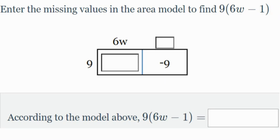So again, find the missing values in the area model to find 9 times 6w minus 1. So this one right here, this is a little bit different. We are not looking for a value. Rather, we're trying to figure out what this might be for this second half. So we know that 9 times 6w, 9 times 6 is 54. Keep the w. I'm going to multiply this coefficient times this constant. Keep the variable.